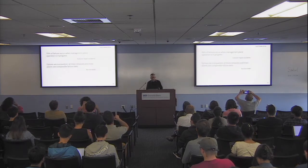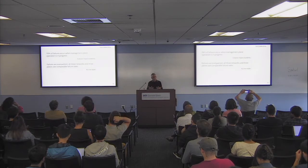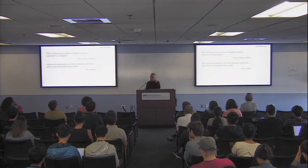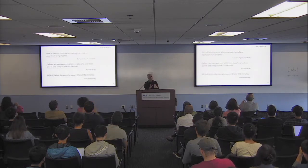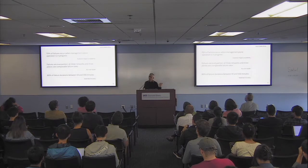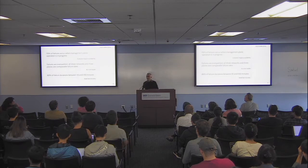What we found is that these failures are everywhere — all three networks see these failures. There is really no one place where you can say, if I fix this, my availability will go higher. A lot of the failure durations are between 10 to 100 minutes, which shows how far we are from the availability guarantees that content providers want.